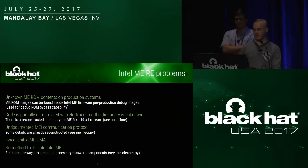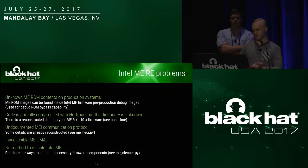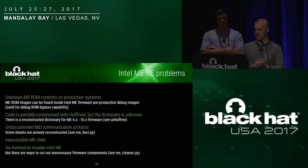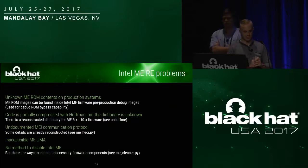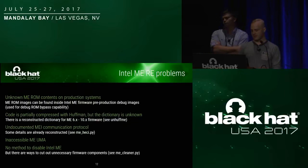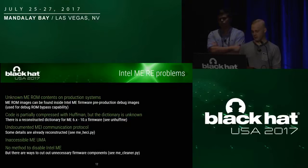Number three: one of the most well-known problems is the undocumented communication protocol; however, the details of this protocol can be reverse-engineered. Four: the ME UMA library in DRAM is inaccessible for the main CPU. And finally, the open-source community has created a method to disable the Intel ME subsystem, but this is quite difficult. A method has already been presented to restrict the subsystem's functionality by cutting unnecessary firmware components.